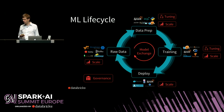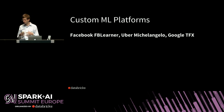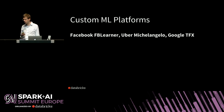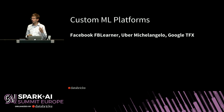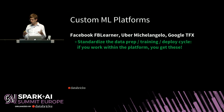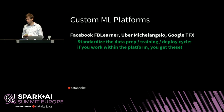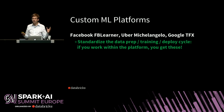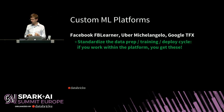One of the main trends in the industry — especially at large tech companies that thrive on data and machine learning — is the development of machine learning platforms. Some of the best known are Facebook's FP Learner, Uber's Michelangelo, and Google's TFX. These internal platforms accelerate the ML lifecycle by standardizing the process for data preparation, training, and deployment, giving data scientists an API where if they work within it, the system can automatically manage and deploy the application. These platforms have been extremely successful, powering dozens of machine learning applications.